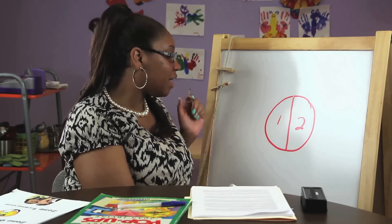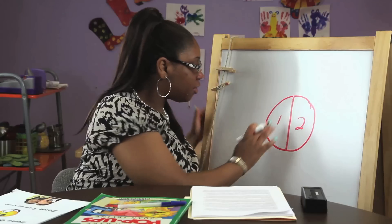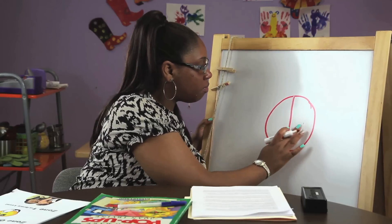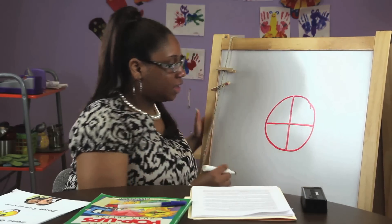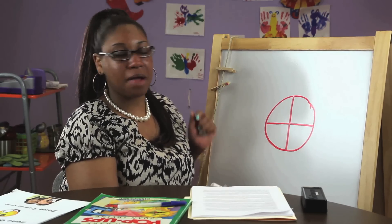Then explain that if we make a horizontal line, then that would be four slices of pie.